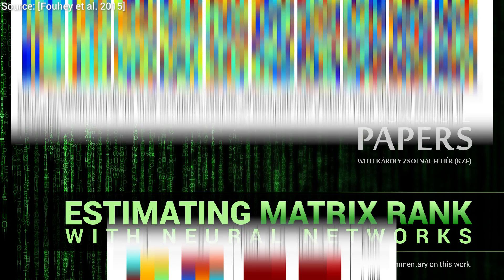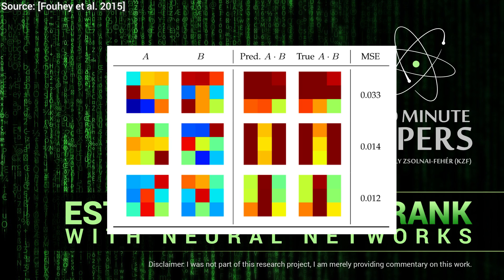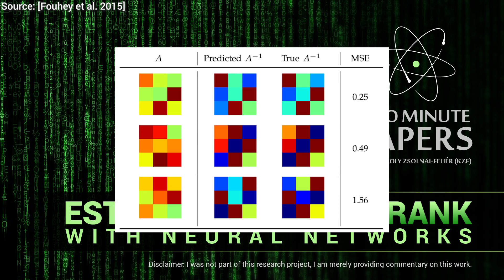We can also try computing the products of matrices, which intuitively translates to guessing the result after we have done one transformation after the other, like the output of scaling after a rotation operation. They also try to compute the inverse of matrices, for which the intuition can be undoing the transformation. If it is a rotation to a given direction, the inverse would be rotating back the exact same amount, or if we scaled something up, then scaling it back down would be its inverse.